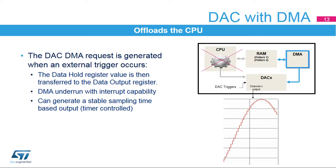The DAC can also create DMA requests from the trigger signal. Once a trigger is detected, the data hold register value is then transferred to the data output register. Then the DMA request is generated to obtain the new data for the data hold register. As the update of the output data register is initiated directly by the trigger signal, the DAC output signal will not have jitter, so that it can create a stable sampling time signal output, making it easy to filter out the sampling frequency.